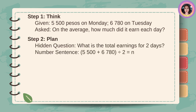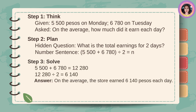Step 2 - Plan. Hidden question: What is the total earnings for 2 days? Number sentence: P5,500 plus P6,780 divided by 2 is equal to N.